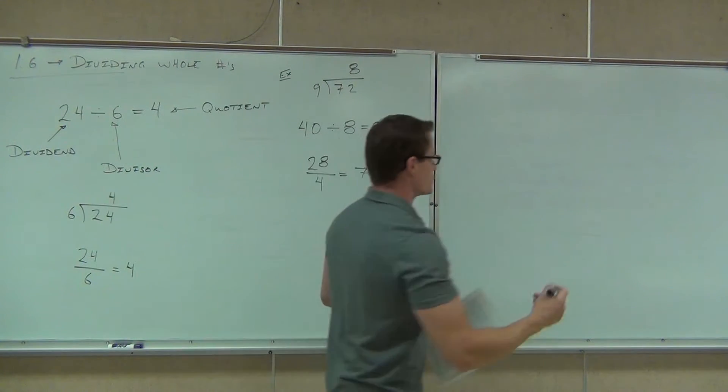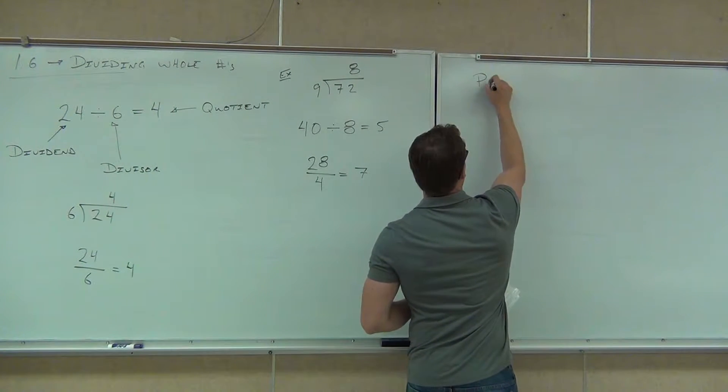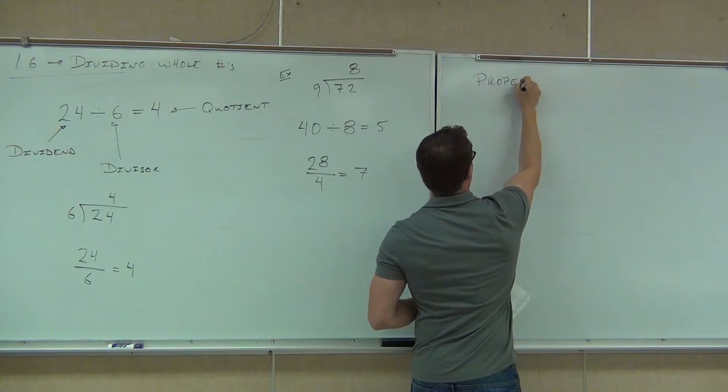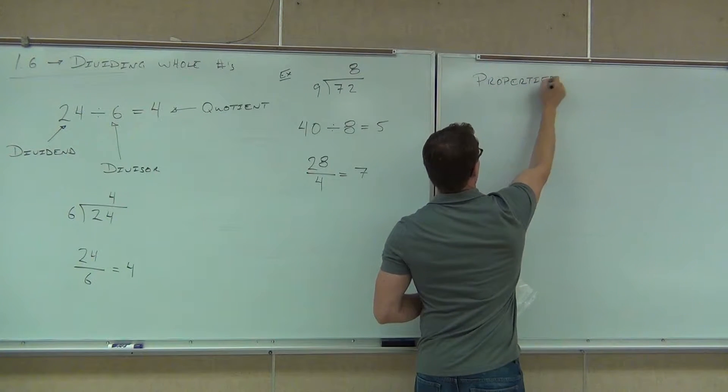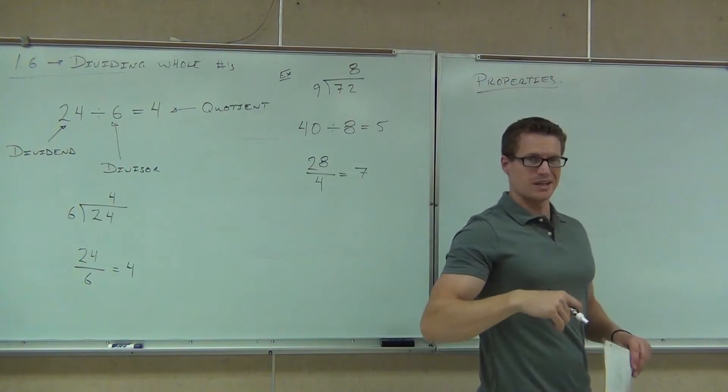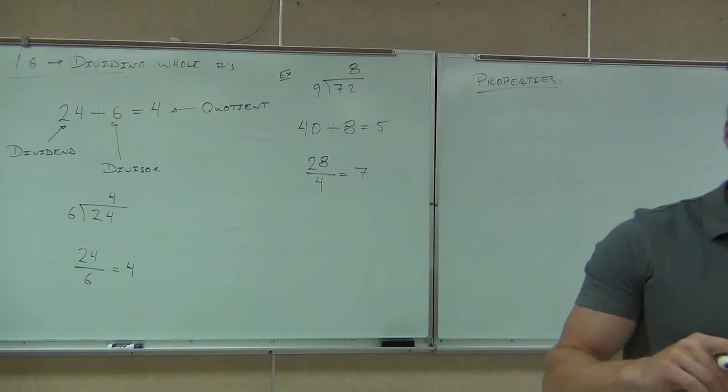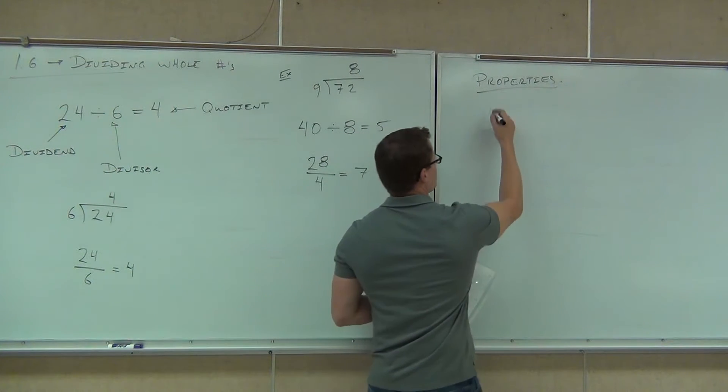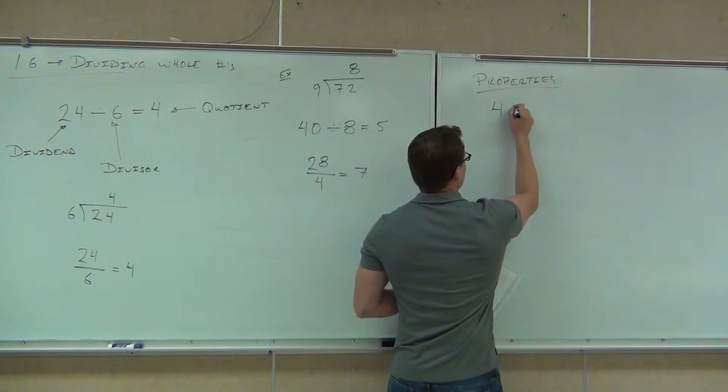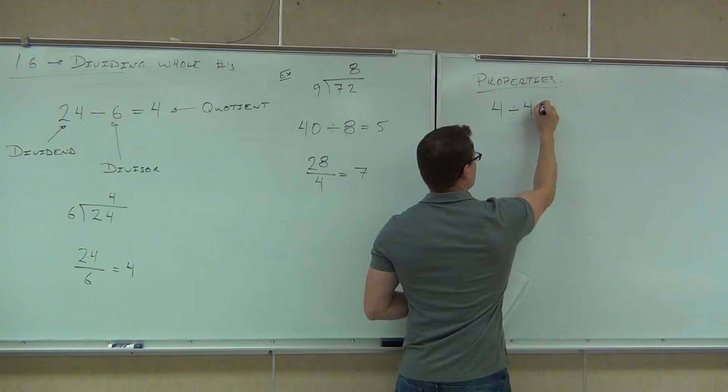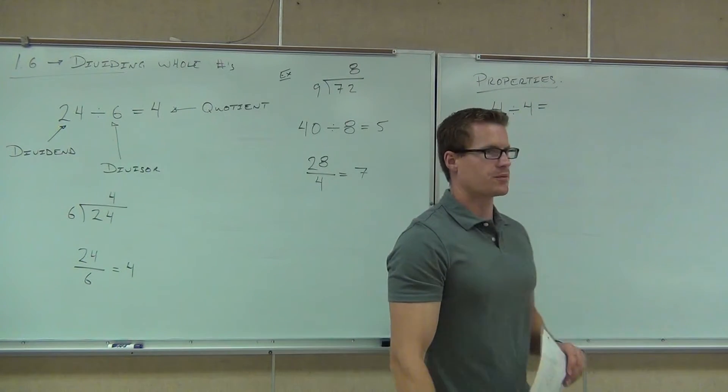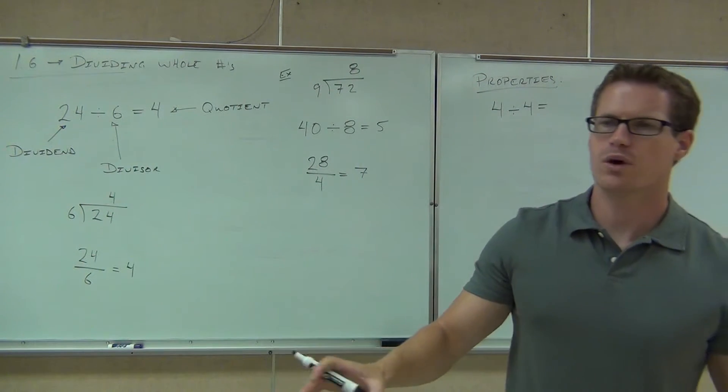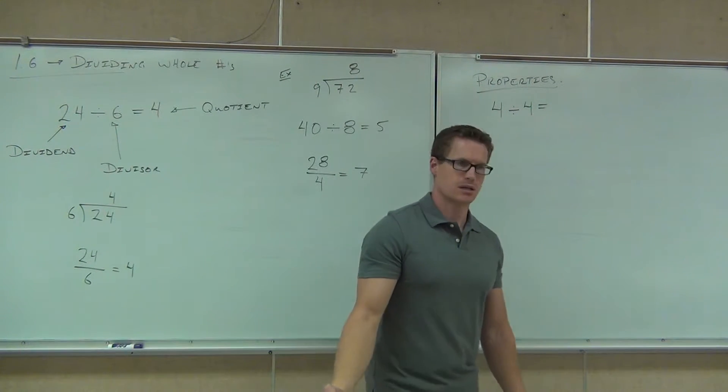Now, there are some properties of division. One of these is obviously really important for you to get a handle on. We'll talk about it specifically for just a couple minutes. First thing is this. If you divide a number by itself, any number by itself, what are you always going to get? One. Every time.